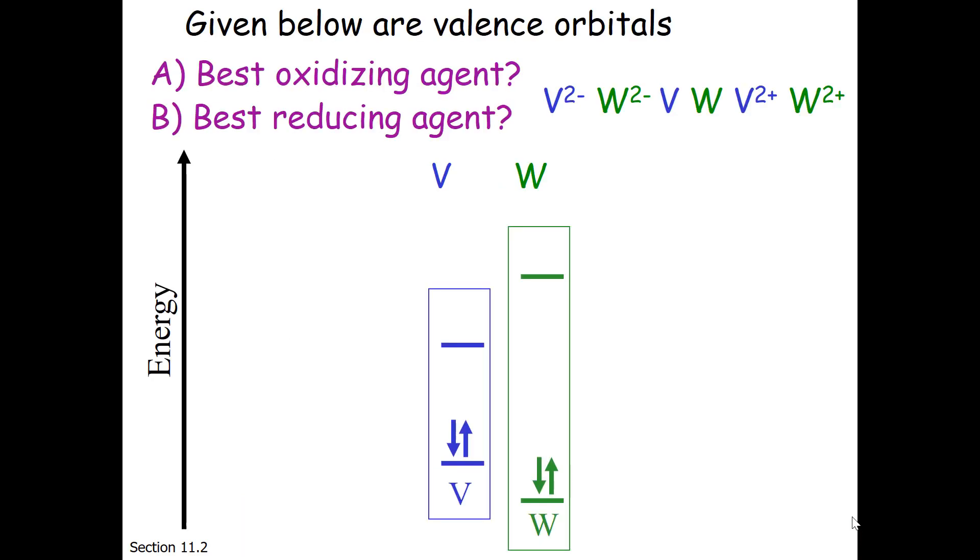Now let's try to solve a problem looking at some valence orbitals. The idea here is that the nucleus is down below, and there might be some other full orbitals with electrons in them, but they're not the ones we're interested in. We're interested in the outermost electrons and the next closest empty orbitals, although there may be other empty orbitals above where we're looking. We're just looking at the valence band. So given mystery elements V and W, we want to know which one is the best oxidizing agent and which one is the best reducing agent.